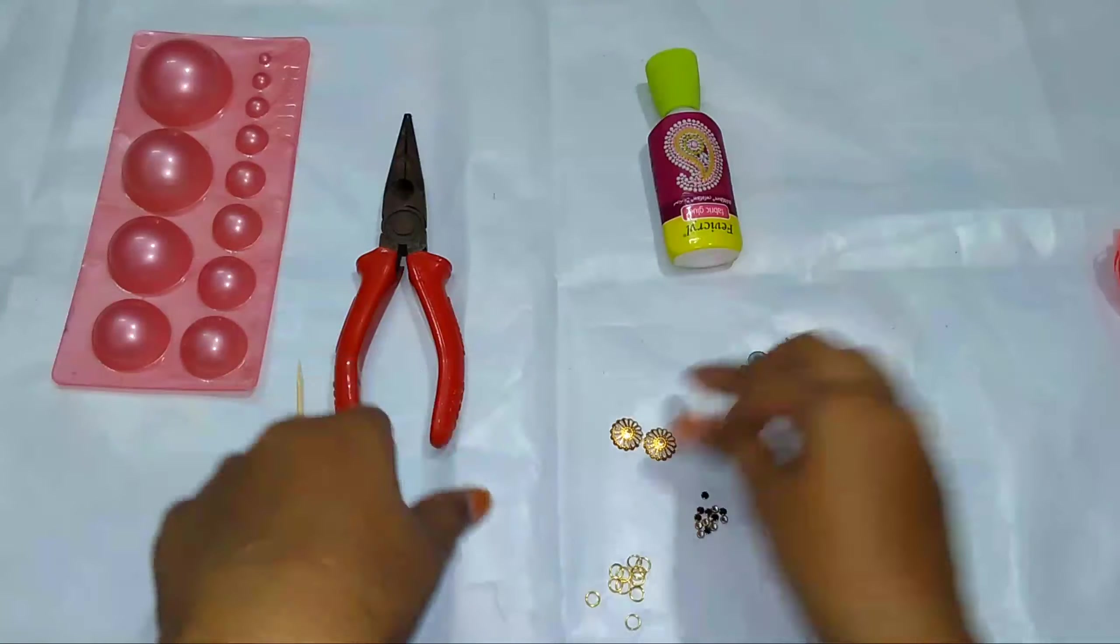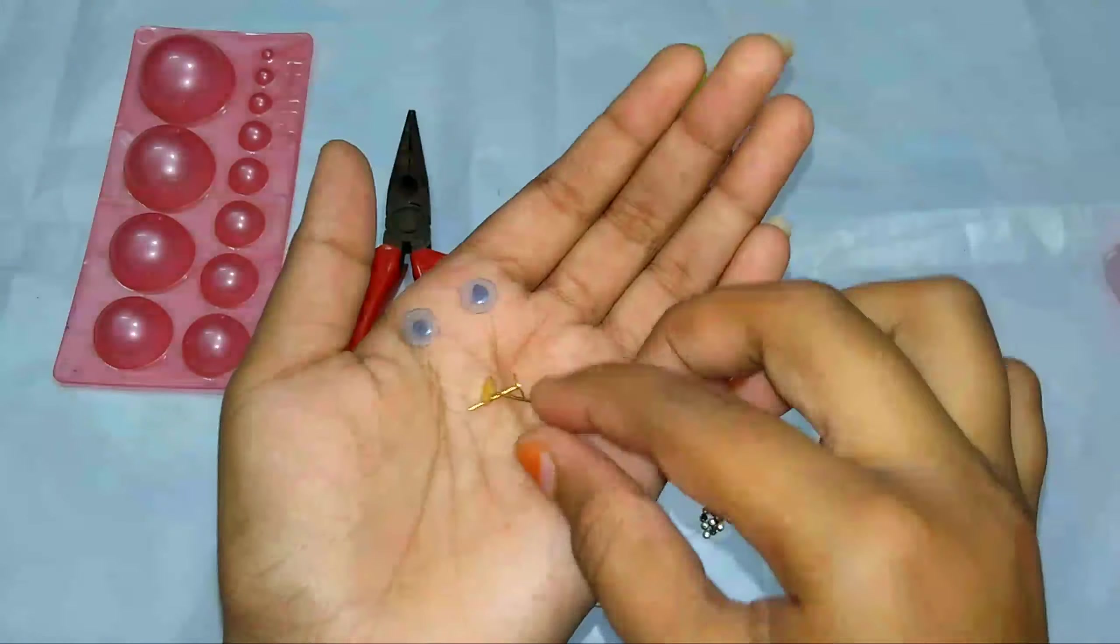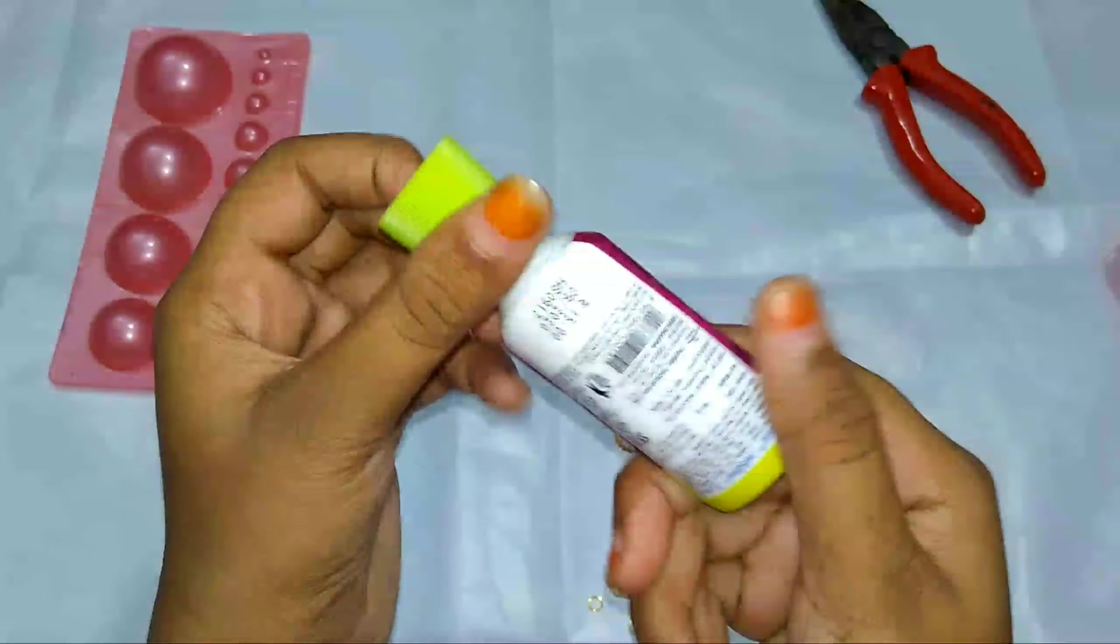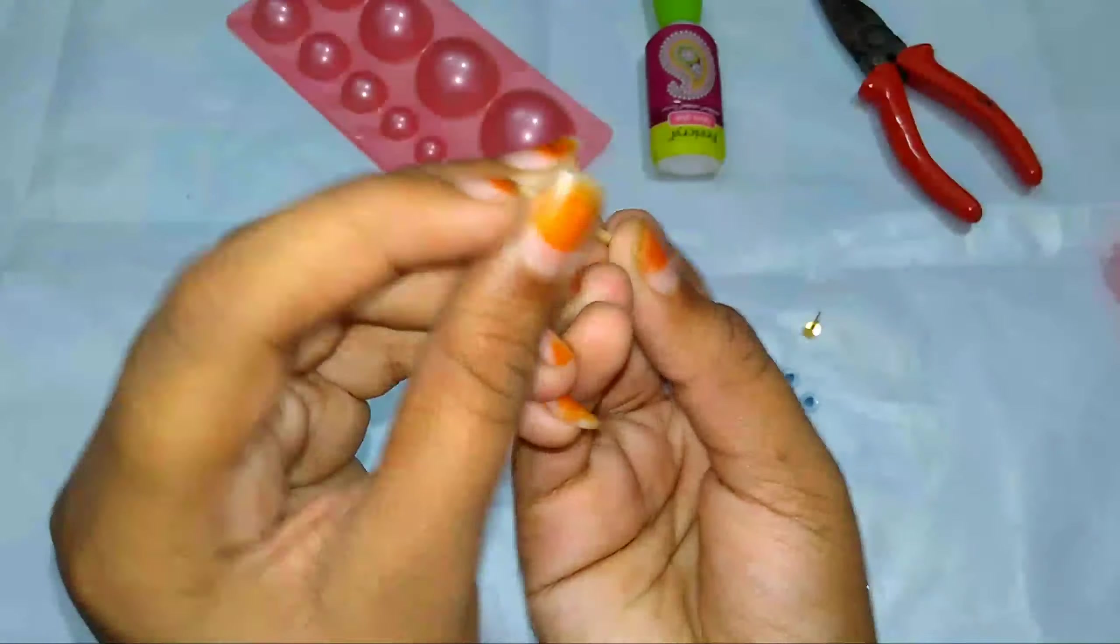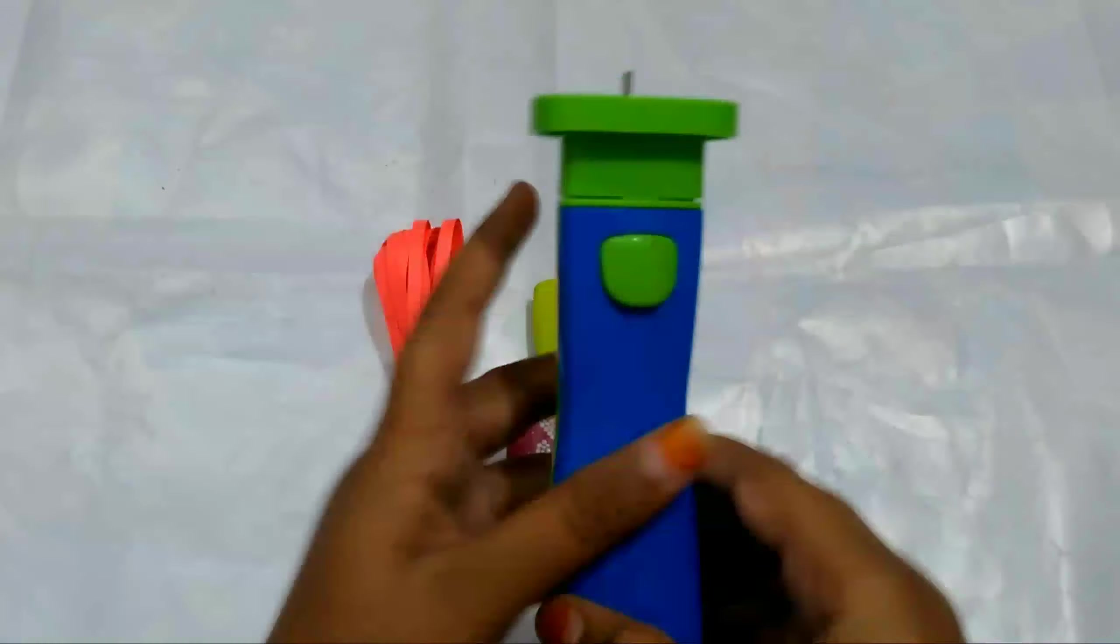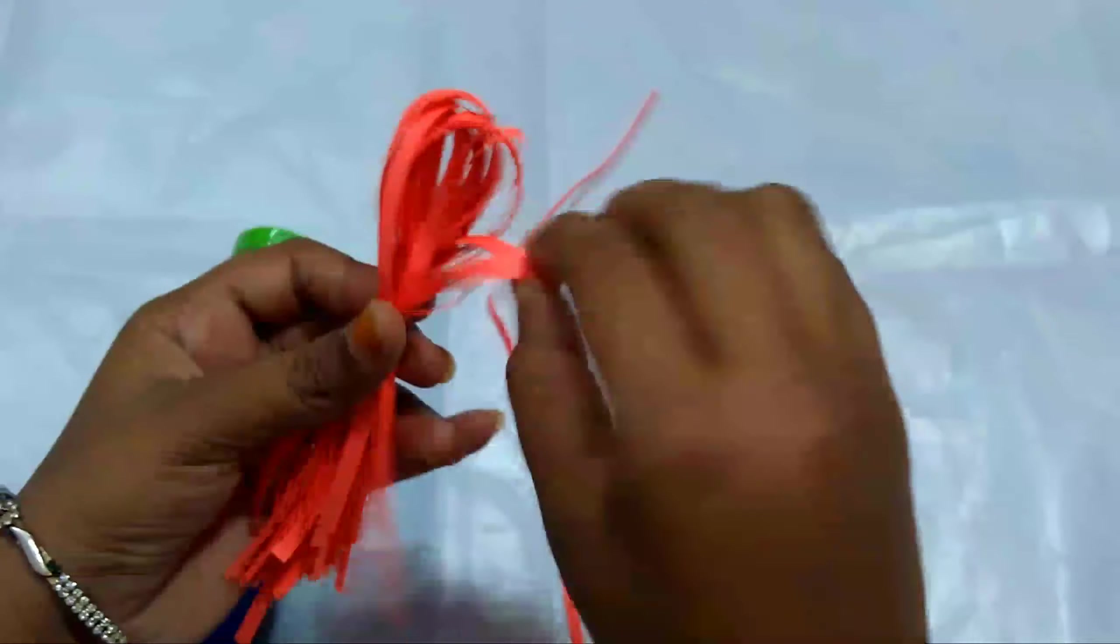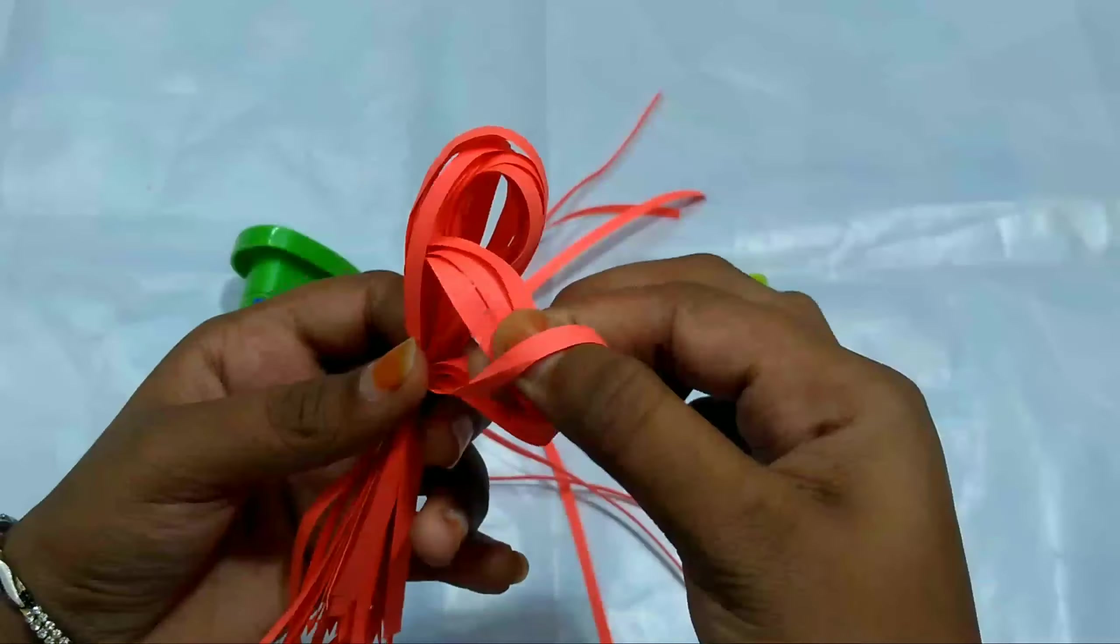You'll also need flower caps, studs, tweezers, glue, jhumka base, and toothpick. Now take the super quiller, quilling strands, and glue, and take seven quilling strands.